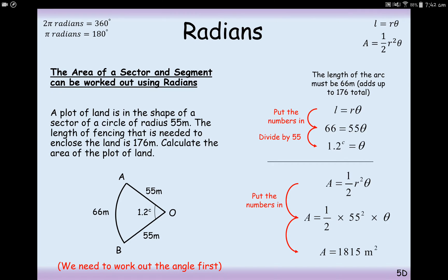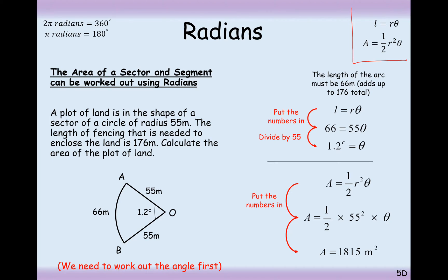It's fairly straightforward in this chapter. It's just using these two formulas: L equals r theta, and A equals half r squared theta.